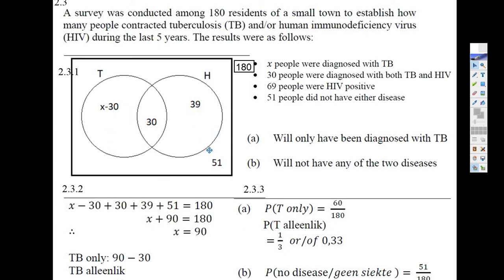Now it says: what's the probability that you'll only be diagnosed with TB? That would be this number here, X minus 30, divided by 180. But we've got to figure out what X is. All you do is add up all the numbers in the box and set X minus 30 equal to 180. So: X minus 30 plus 30 plus 39 plus 51 equals 180. Those numbers — 30, 39, 51, minus 30 — sum to 90. Take away 90 from 180, and X is 90.